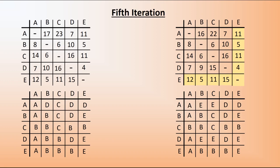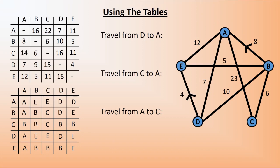On the next slide, we'll look at how we use this. Here are the tables in their completed state after five iterations of Floyd's algorithm. The tables tell us how to travel from one vertex to another via the minimum possible distance. To show how this works, here are three examples. First, we travel from D to A. We look in the distance table: the distance is 7. We look at the corresponding cell in the route table — it says A. Since A is one of the two vertices in the row or column, we can travel straight from D to A. Our route is simply DA.